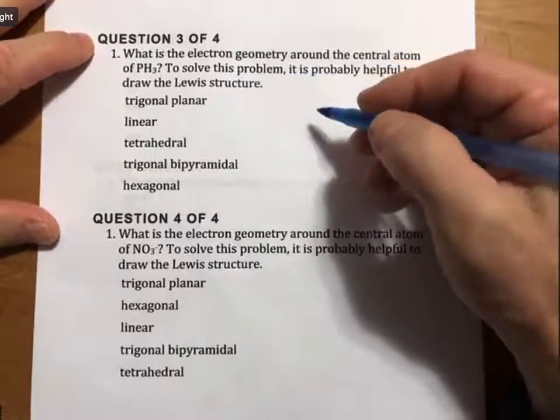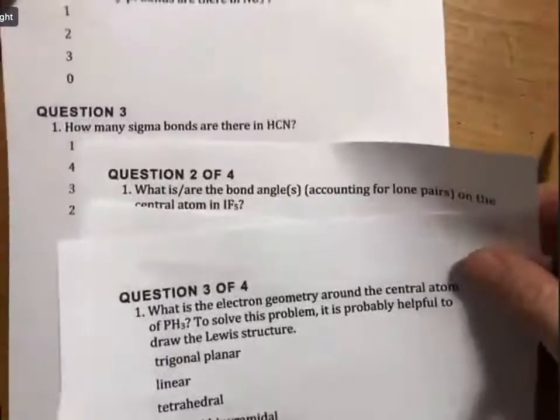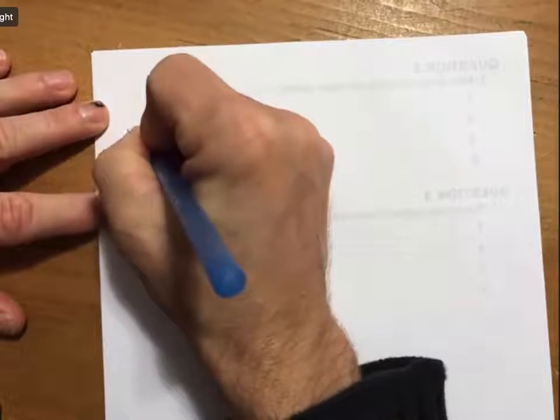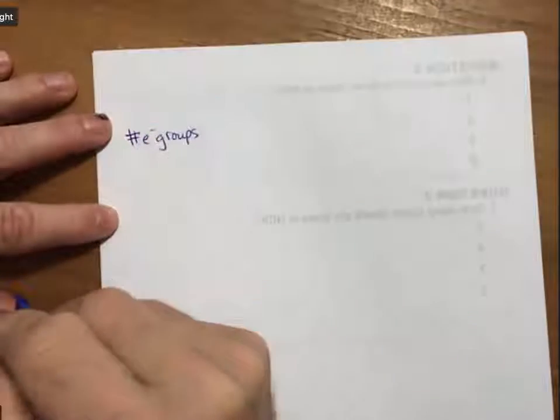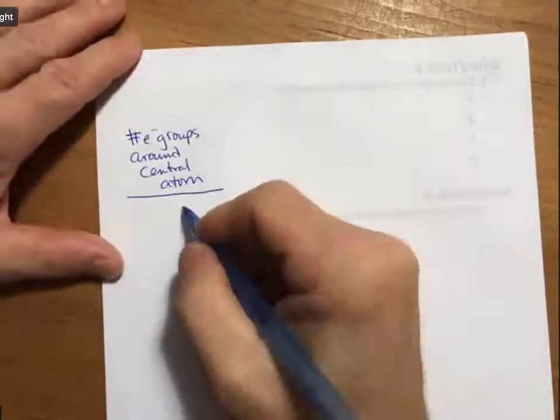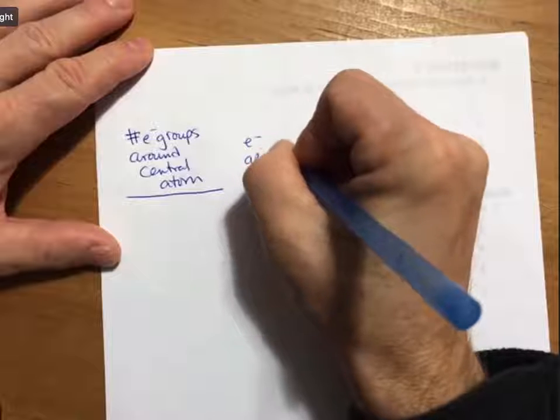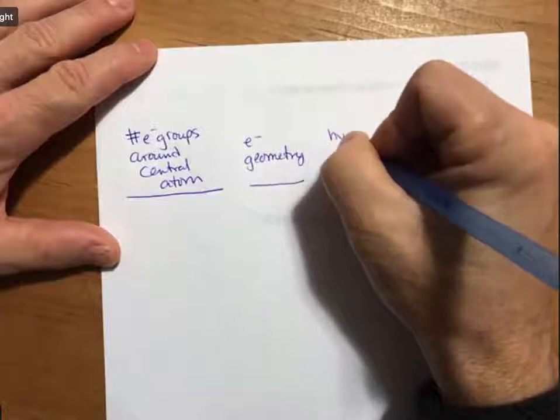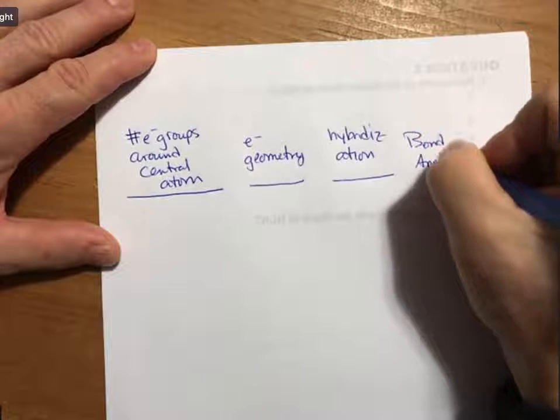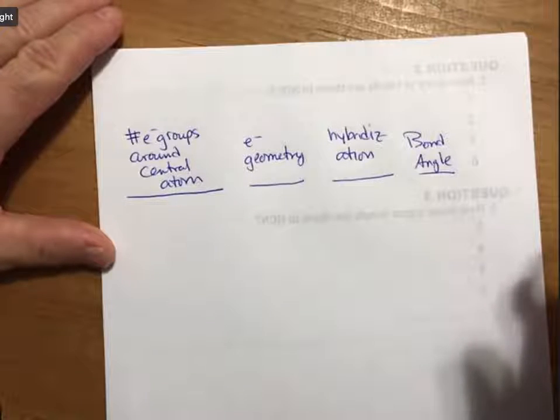The way electron geometry works, we have electron geometry, we have hybridization, we have bond angles, and we have pi bonds and sigma bonds. All of these things require that we know the Lewis structure. Once we do that, we're going to count up the number of electron groups around the central atom. From the number of electron groups, you can tell the electron geometry, the hybridization, the bond angle, and then we'll talk about what a sigma bond and a pi bond is.